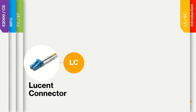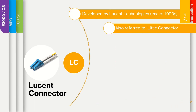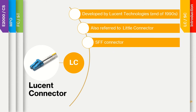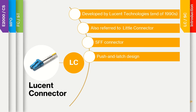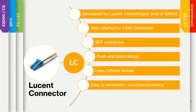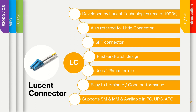We start with the LC connector, the Lucent connector. This was developed by Lucent Technologies towards the end of the 1990s. Sometimes it is also referred to as the little connector. It is a small form factor connector incorporating a push-and-latch design, providing pull-proof stability. It is one of the most used connector types worldwide. LC connectors use a 1.25 mm ferrule, which is also used with other connectors like the MU and LX5 or E2000. The LC connector is easily terminated and yields good performance. It is also a preferred connector for single mode fiber. LC connectors are available in single mode, multi-mode, and in UPC, APC, and PC configurations.